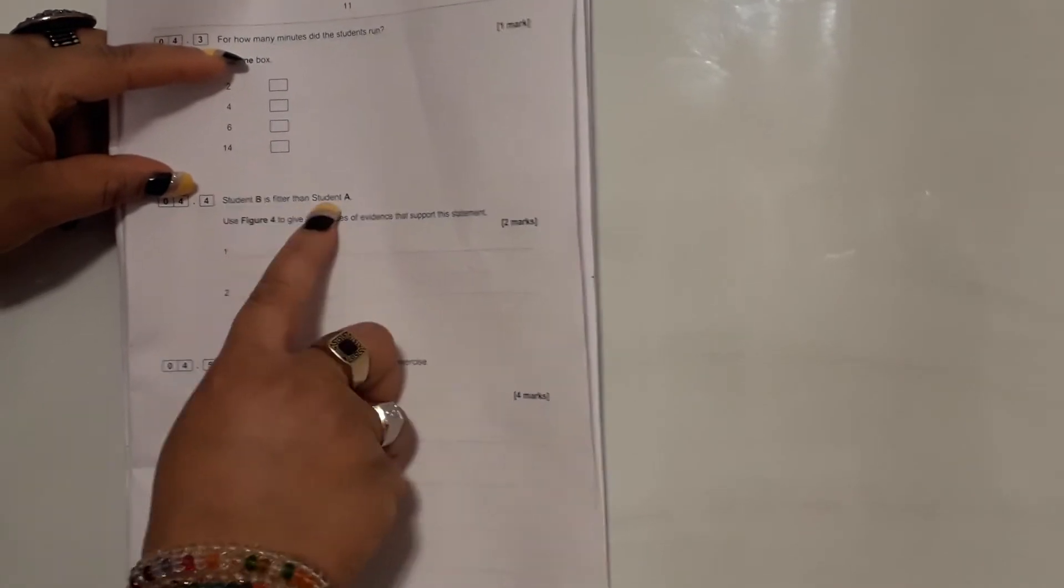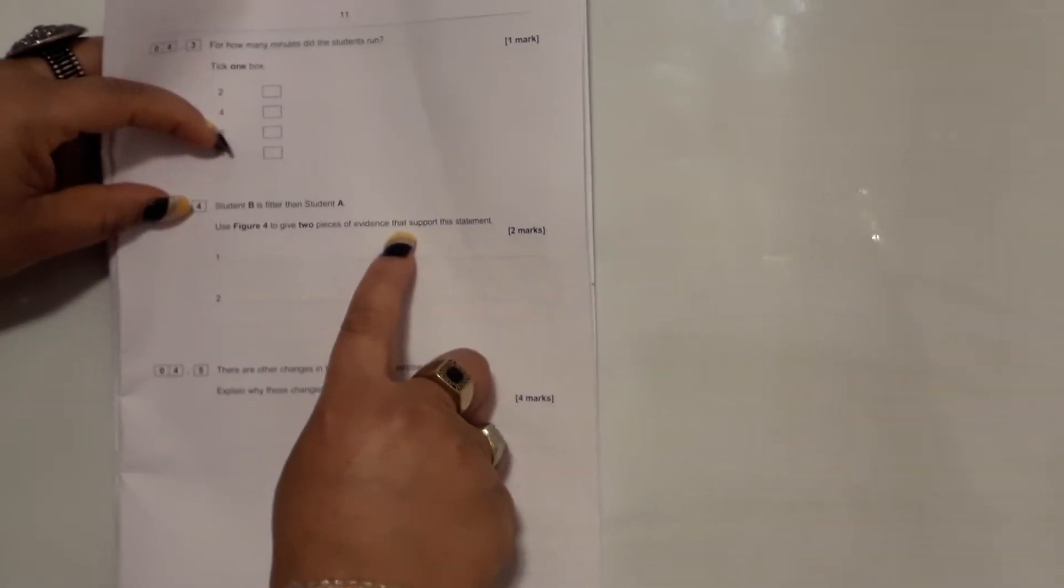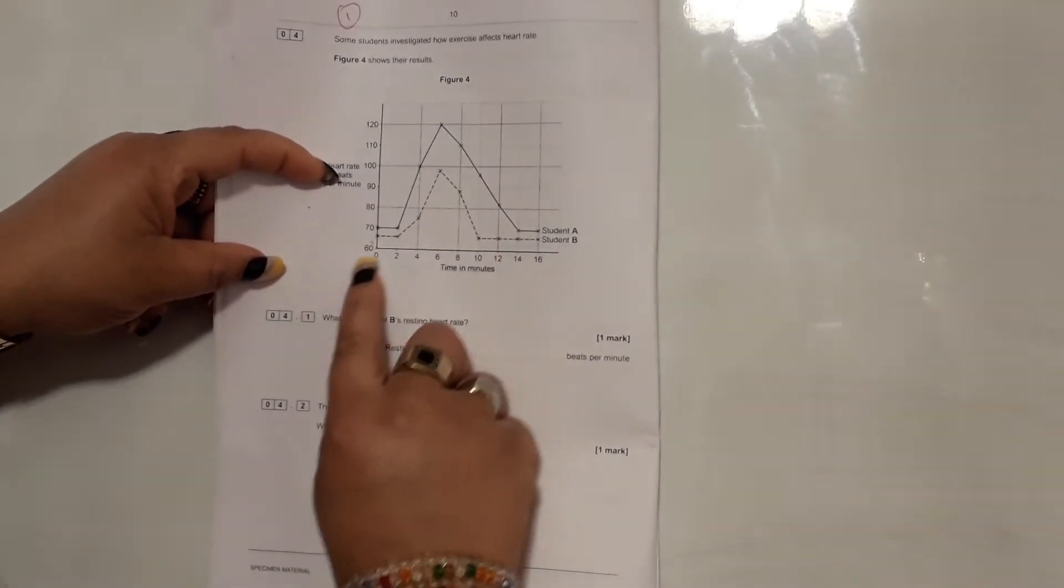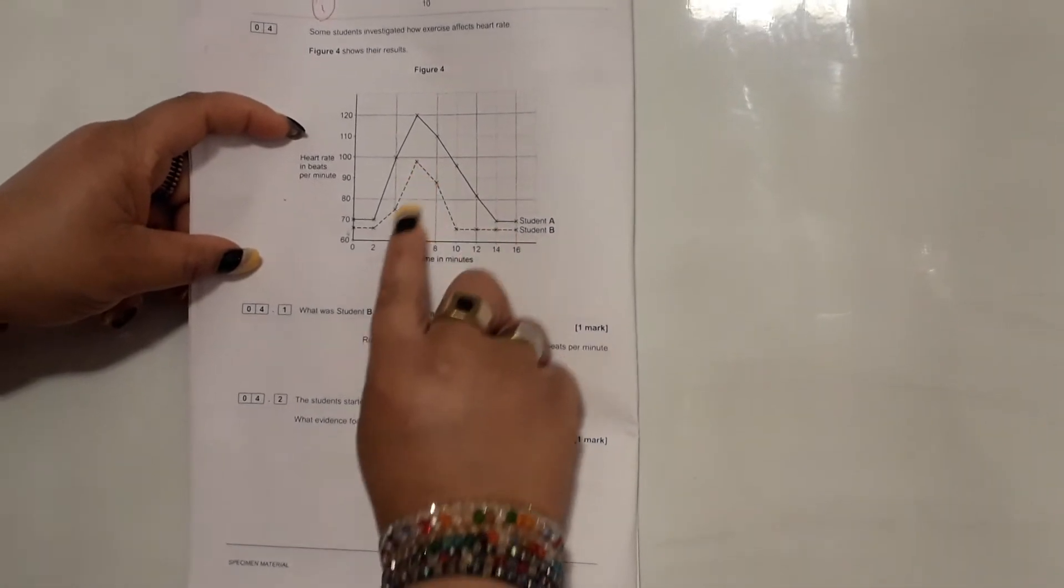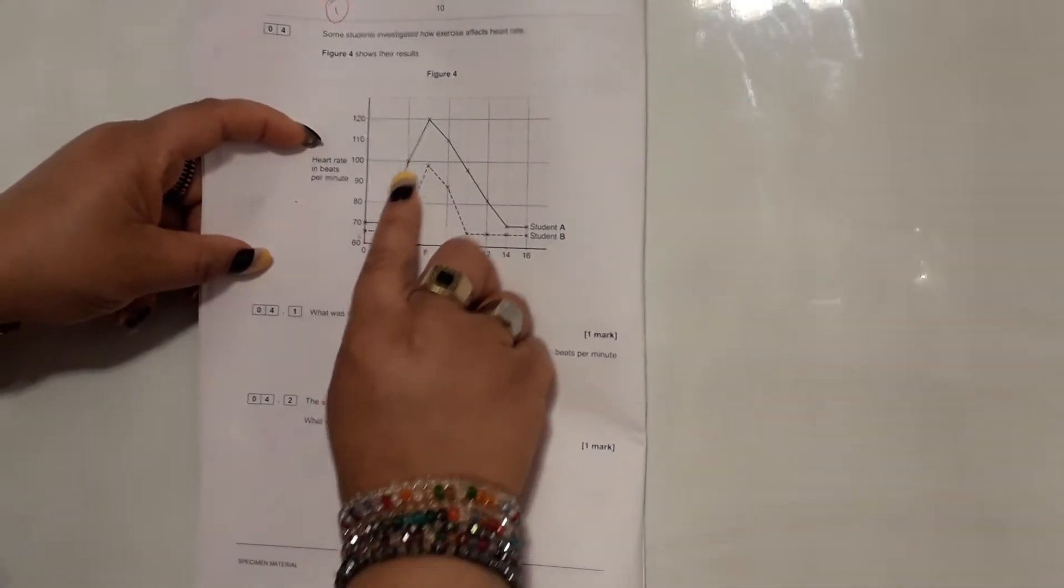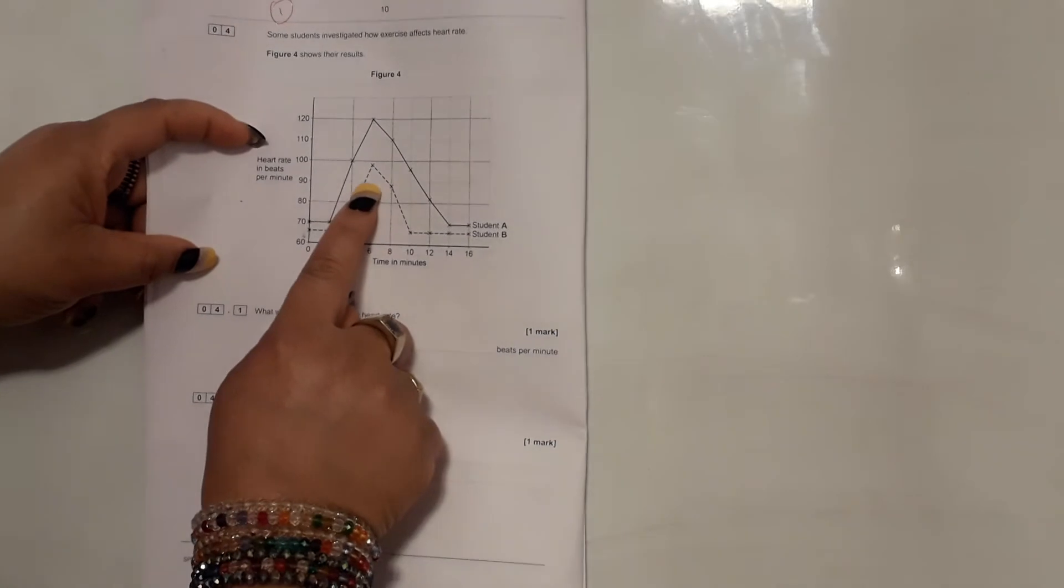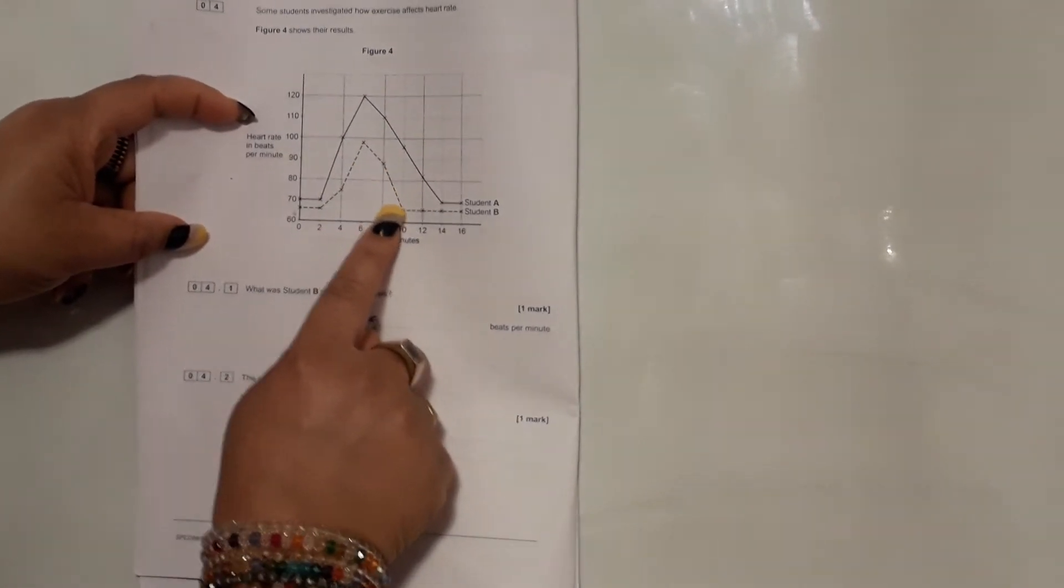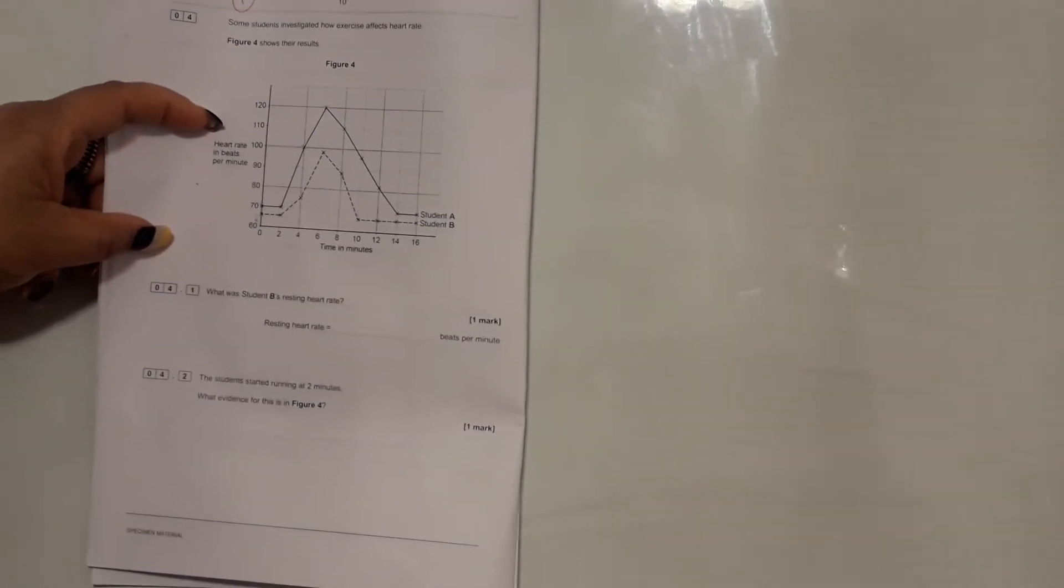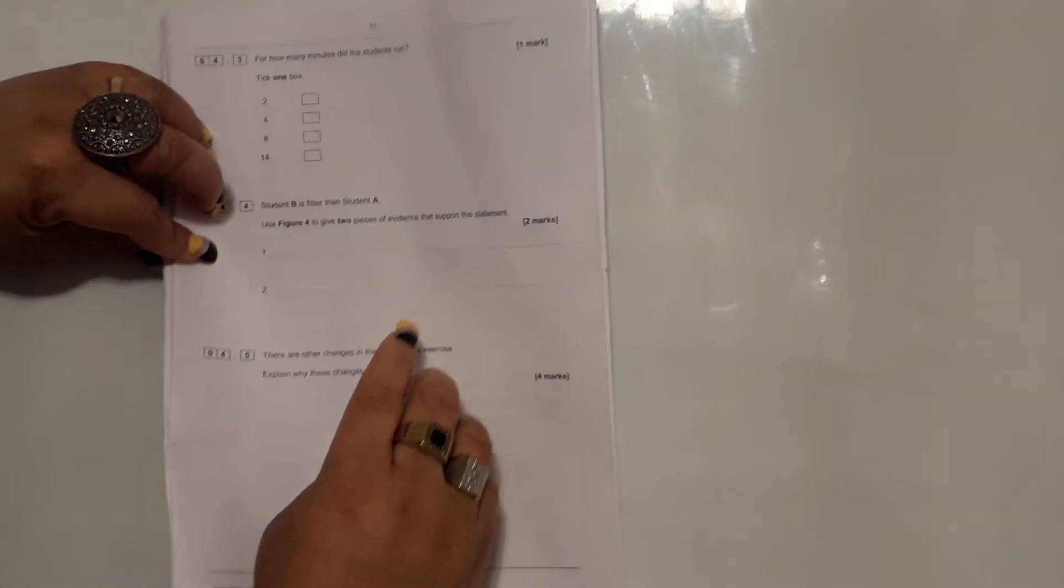Student B is fitter than student A. Use this figure to give two pieces of evidence that support this statement. Obviously, student B has a much lower resting heart rate. And if you also look at how the heart rate in beats per minute increased, how the heart rate of student B increased, it wasn't quite as sharp and it did not go as high when you compare it with that of student A. And eventually when student B stopped running, the way their heart rate returned to normal was much calmer and quicker. That one took a long time to return to normal resting rate. So those are some of the reasons you give here to get your full two marks there.